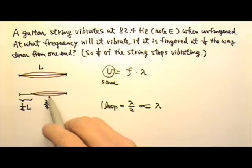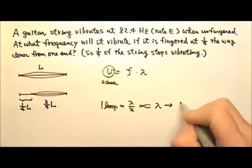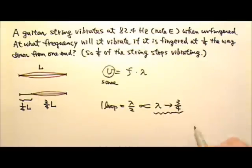The length of a loop changes by a factor of three-fourths. Because it used to be L, now it's three-fourths L. So the length of one loop changes by a factor of three-fourths. This means the wavelength changes by a factor of three-fourths.